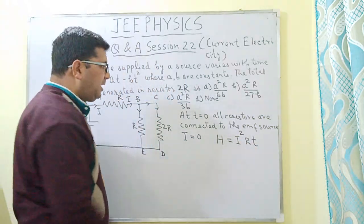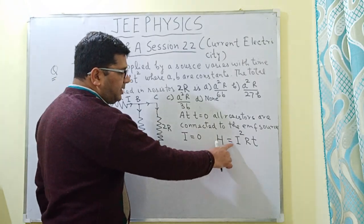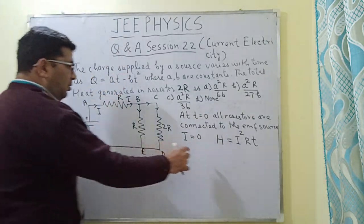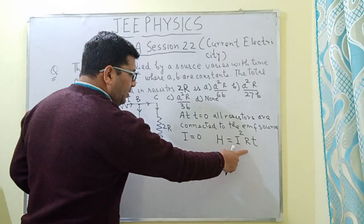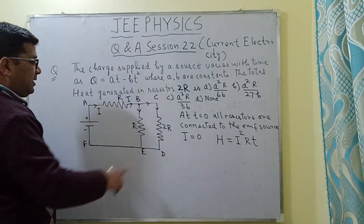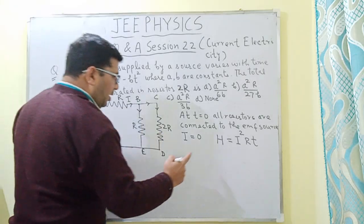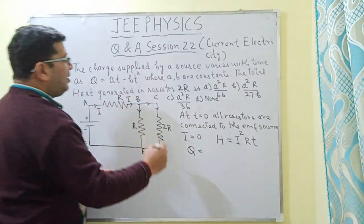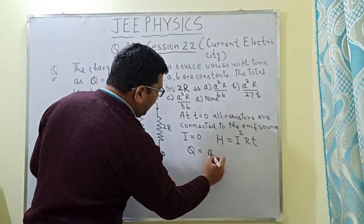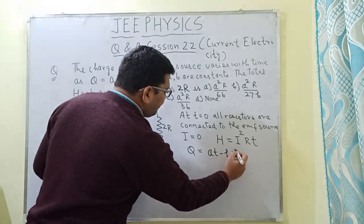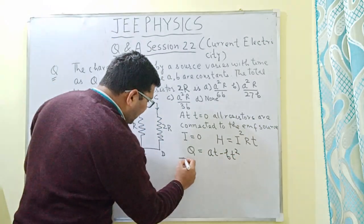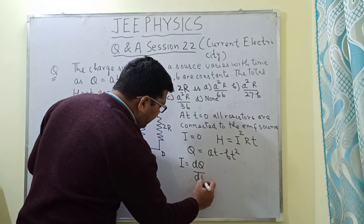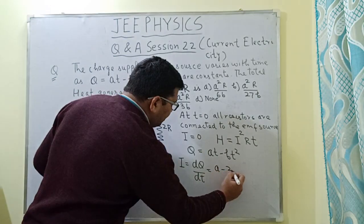The heat generated in a resistor is given by H = I²R·T, where I is the current flowing through that resistor and T is the time. I will be using this formula to calculate the total heat generated in resistor 2R. We have been given Q = AT - BT², and we also know that the current I = dQ/dt, so this will be equal to A - 2BT.